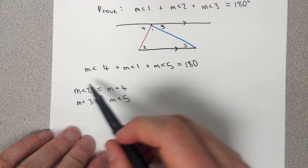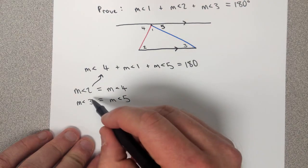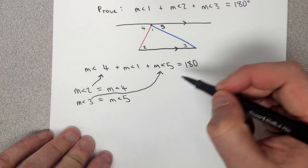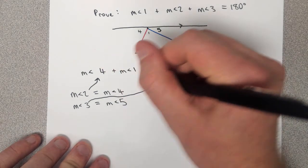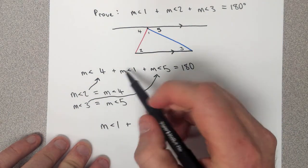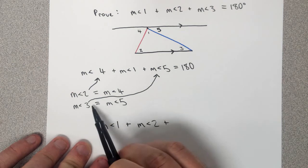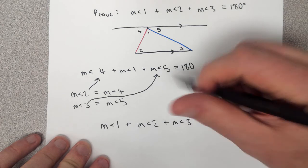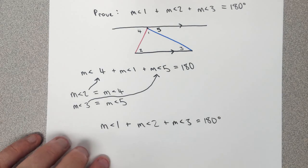And now I can take each one of these, measure of angle 2 and substitute that in here. Take the measure of angle 3 and substitute that in here. And then just make a quick shift to have this match up here, saying that we still have the measure of angle 1. We're substituting the measure of angle 2 for the measure of angle 4, and we're substituting the measure of angle 3 for the measure of angle 5. And this is all still equal to 180 degrees, which is precisely what we were trying to prove.